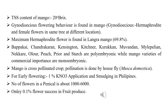The TSS content of commercial mangoes is about 20 degrees Brix. Gynoecious flowering behavior is found in mango — also found in fig and some varieties of papaya. Gynoecious means hermaphrodite (bisexual) flowers and female flowers exist on the same tree at different locations. The maximum bisexual flower percentage is found in Langda mango — about 69.8% — but in Langda, flower and fruit drop is a critical problem.